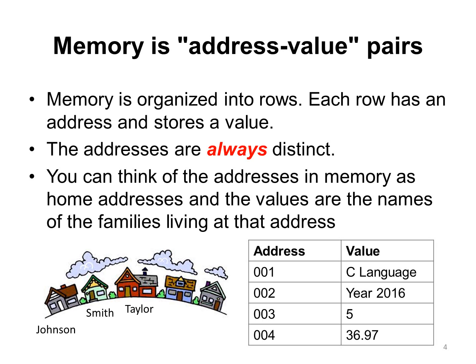Computer memory is organized in address value pairs. Each row has an address and a value is stored at that address. You can think of the addresses in computer memory as the addresses of houses. The values are the names of the families living in the houses.